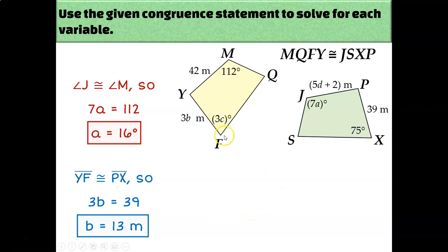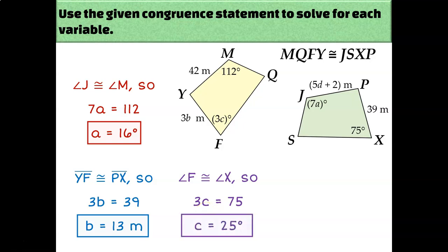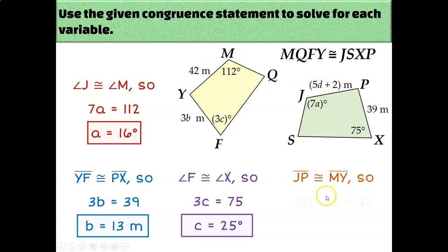Let's solve for C, which is on angle F. F is the third letter in the first quadrilateral's name, and X is the third letter in the second quadrilateral's name, so F and X correspond. X is 75 degrees and F was 3C, so 3C equals 75, meaning C equals 25 degrees. For D, it's on side JP. J and P are the first and last letters in the second quadrilateral's name, and M and Y are the first and last letters in the first quadrilateral's name, so JP and MY are corresponding and congruent. JP is 5D plus 2 meters and MY is 42 meters, so setting them equal, D equals 8 meters.